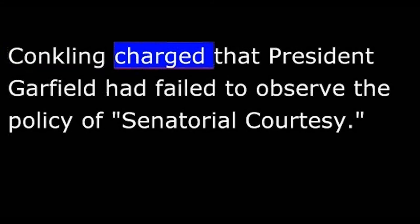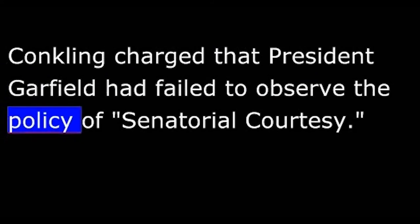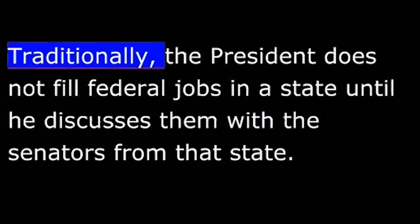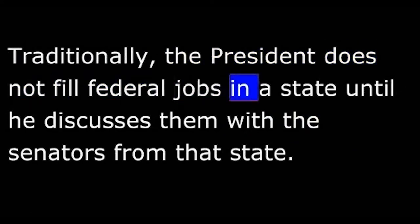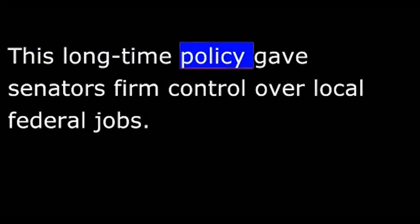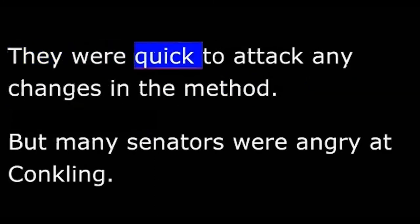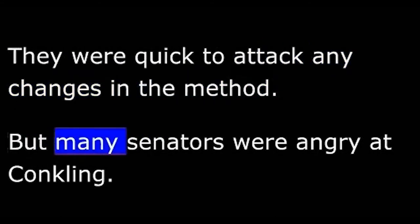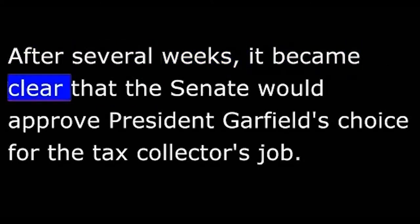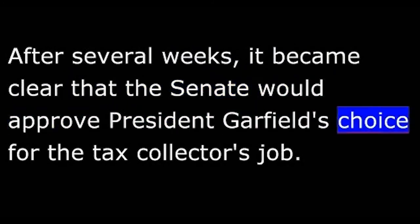Conkling charged that President Garfield had failed to observe the policy of senatorial courtesy. Traditionally, the President does not fill federal jobs in a state until he discusses them with the senators from that state. This long-time policy gave senators firm control over local federal jobs, and they were quick to attack any changes. But many senators were angry at Conkling. They did not like the way he gave orders or threatened his opponents, and they did not want to support him on this issue. After several weeks, it became clear that the Senate would approve Garfield's choice for the tax collector's job.